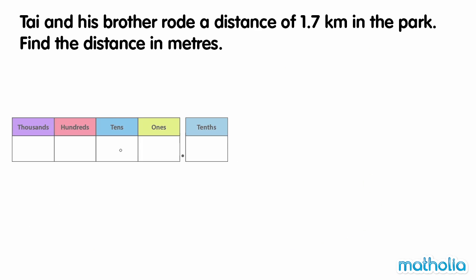Let's write the distance in a place value chart. 1.7 has one ten and seven tenths. In one kilometre, there are one thousand metres. So to convert from kilometres to metres, we need to multiply by one thousand.